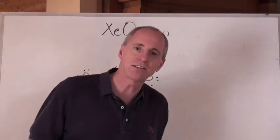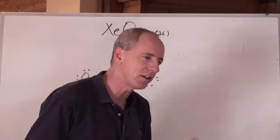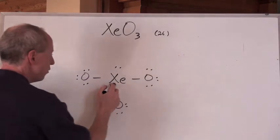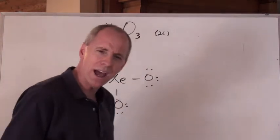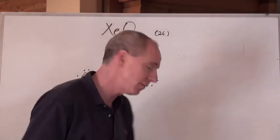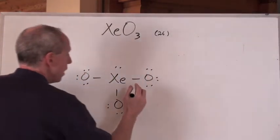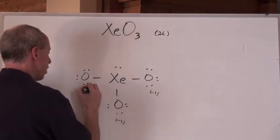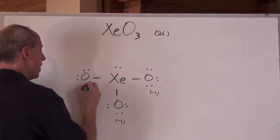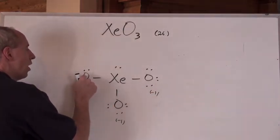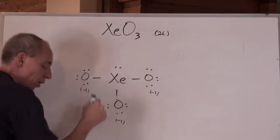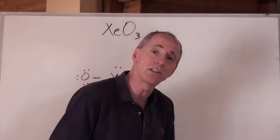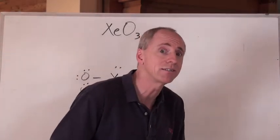And then you say to yourself, 'Hey, can I exceed the octet rule here?' Yes. And why do I have to? All of these oxygens are going to be negative 1 for formal charge, because any oxygen that doesn't have a double bond is actually not as stable as it could be. Oxygen likes a double bond.